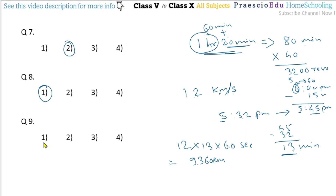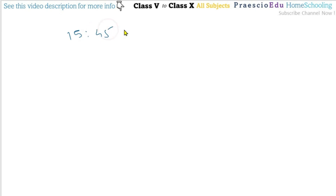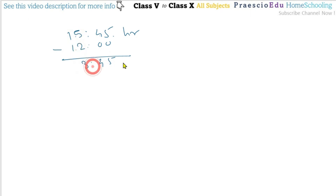Question 9: According to the 24-hour clock, a cricket match starts at 10 o'clock and ends at 15:45. What is the time 15:45 in 12-hour clock format? Subtract 12 noon: 15 − 12 = 3 hours, and 45 minutes stays as is. So the answer is 3:45 pm, which is given in option number 2. Thank you.